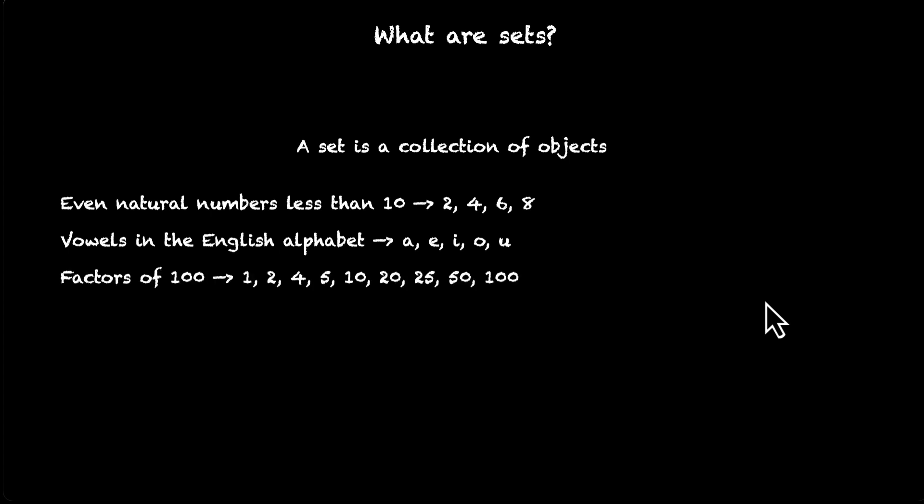Let's look at another one. Factors of 100: well they are 1, 2, 4, 5, 10, 20, 25, 50, and 100 itself. These are all the factors of 100, and it's a good collection of objects. So all of these are sets.